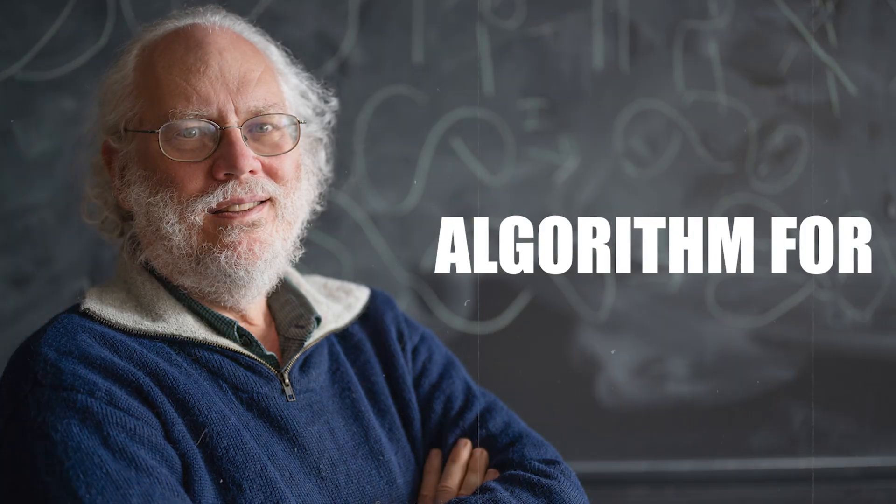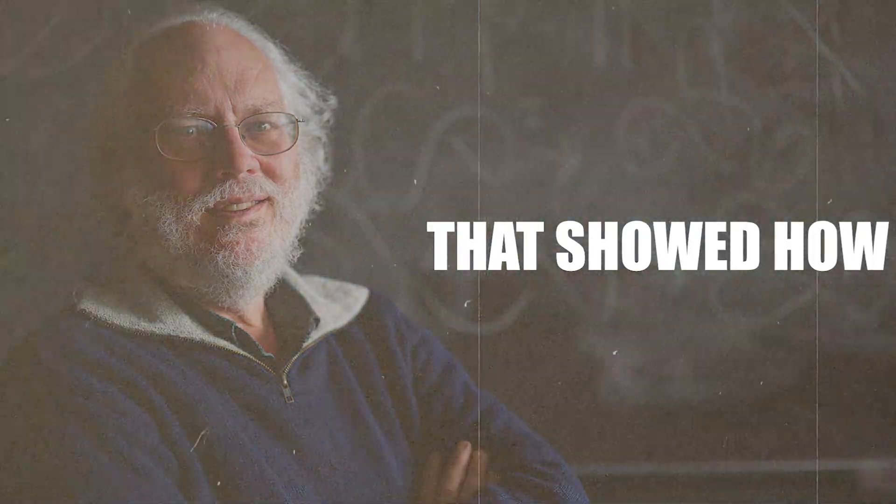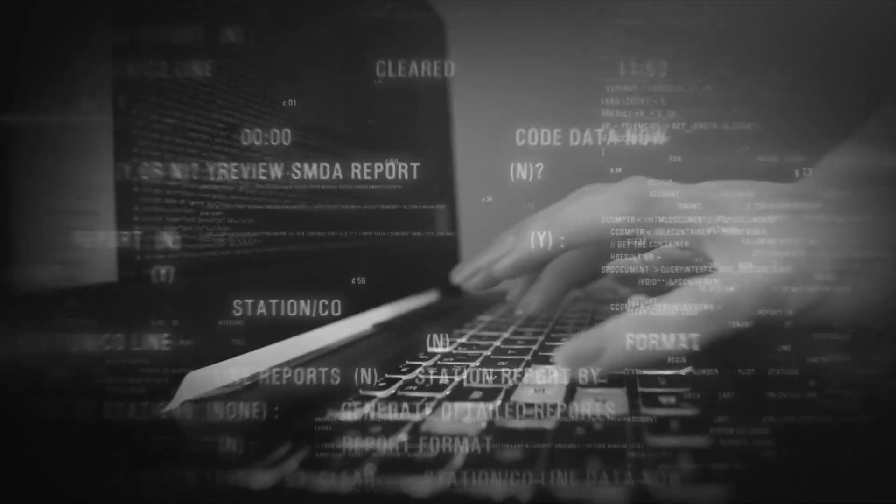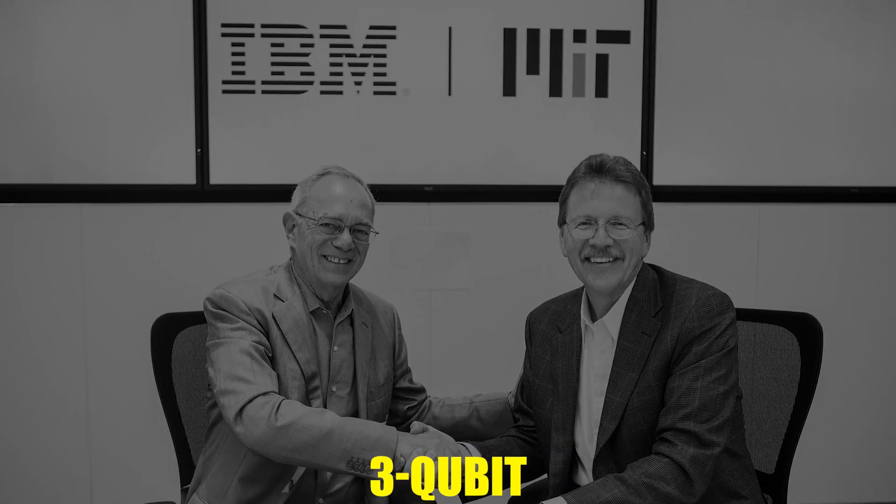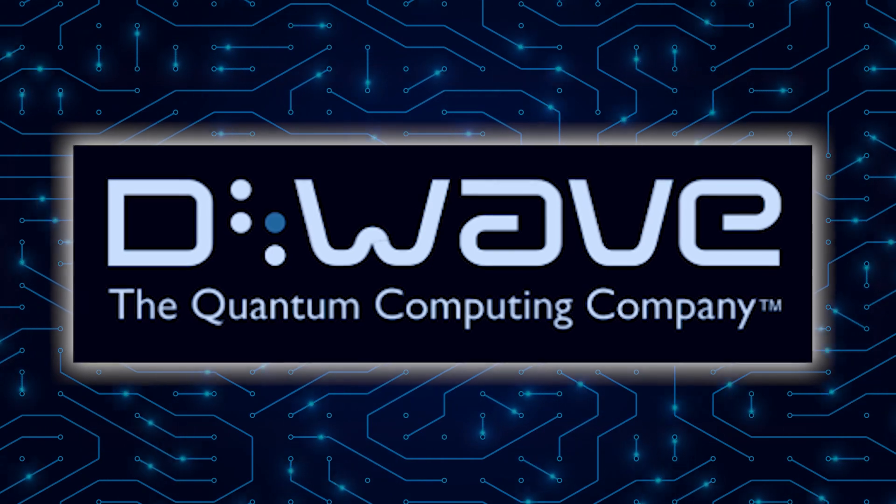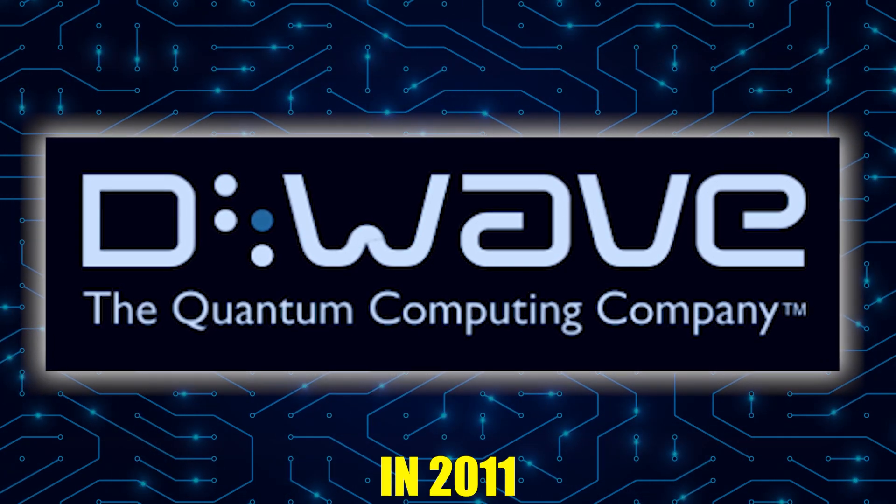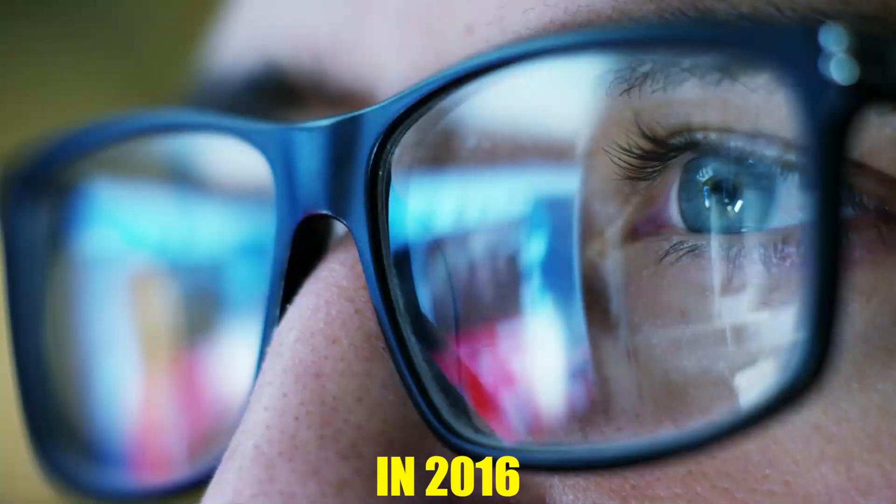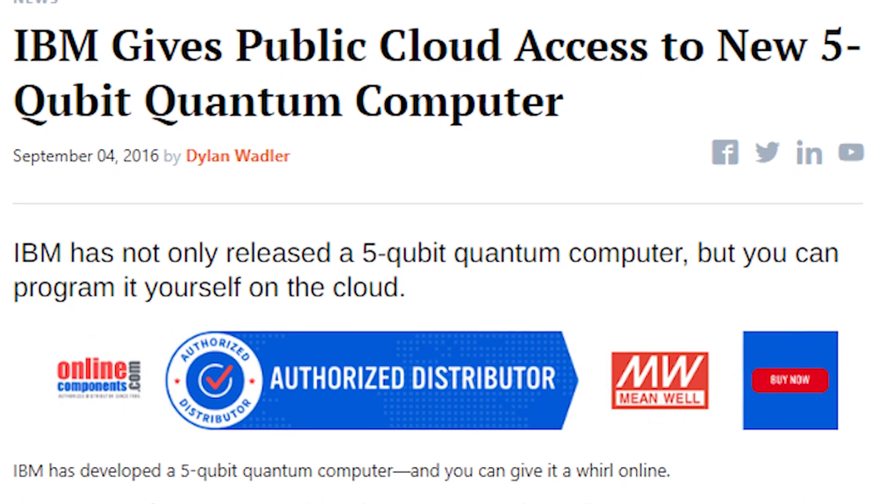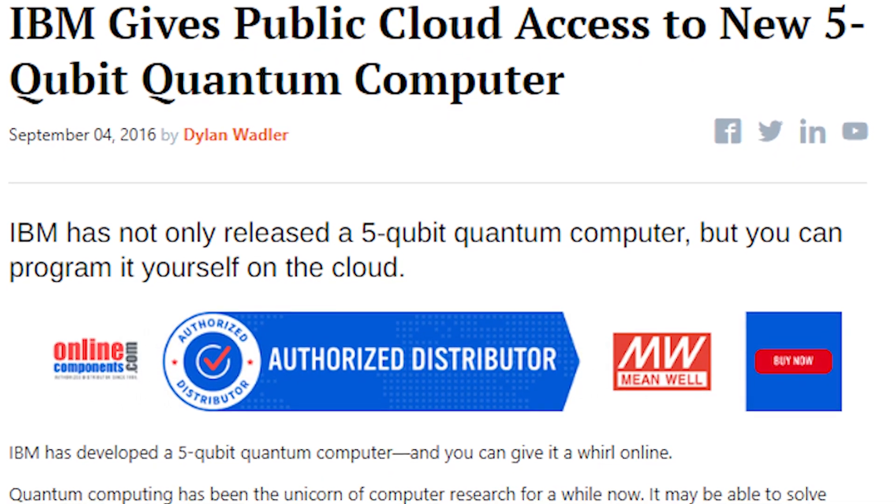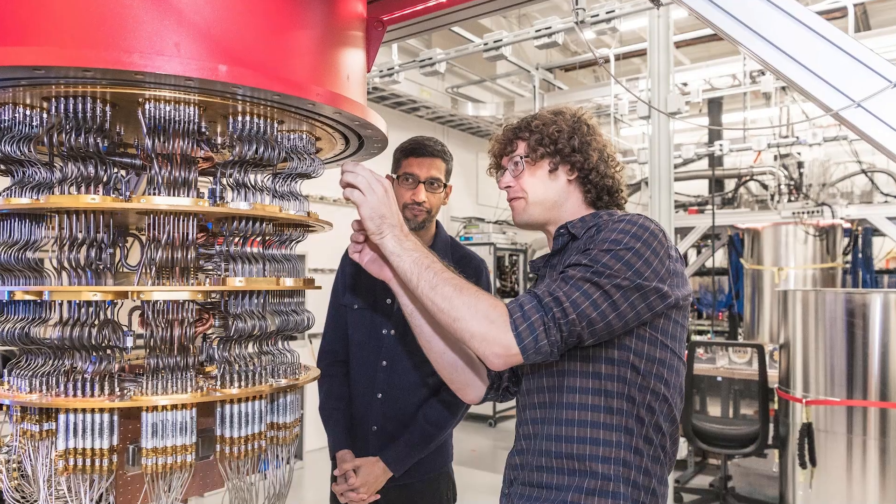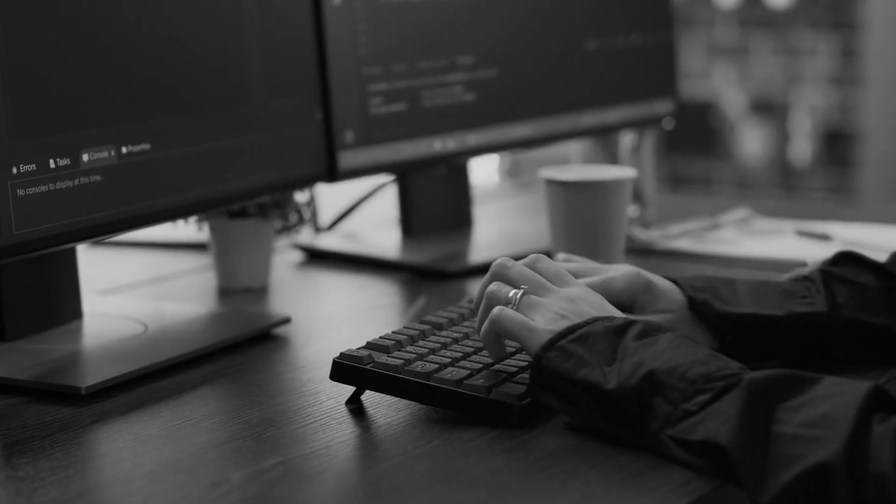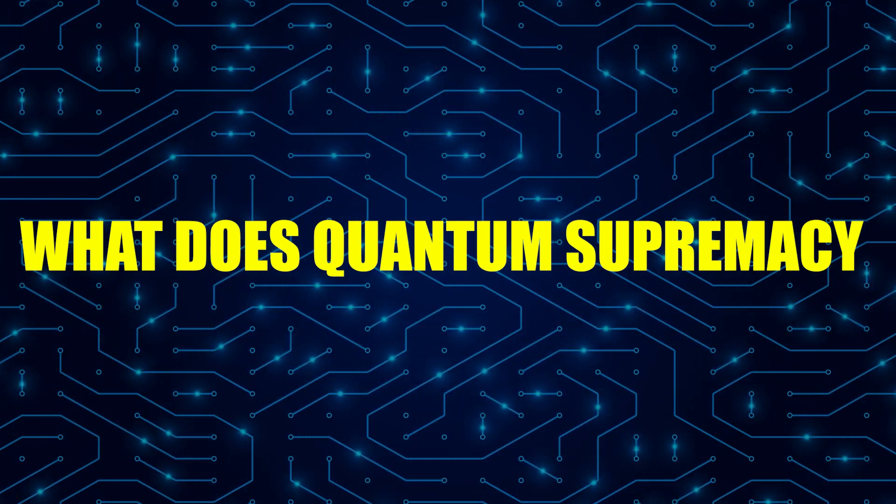Peter Shor created an algorithm for factoring large numbers in 1994 that showed how quantum computing could be used to solve difficult problems. In 1998, researchers at MIT and IBM built the first 3-qubit quantum computer. D-Wave Systems released the first commercial quantum computer in 2011, but it was debated whether it represented quantum computing. In 2016, IBM released a 5-qubit quantum computer that could be accessed through the cloud. Google said in 2019 that they'd reached quantum supremacy, meaning their quantum computer could do a certain calculation faster than any traditional computer.